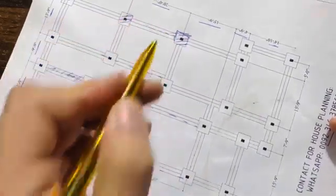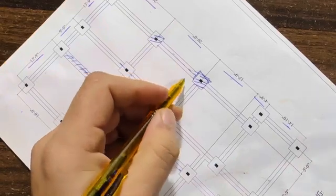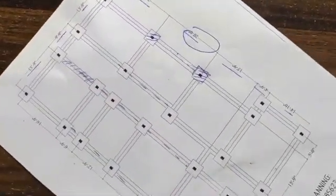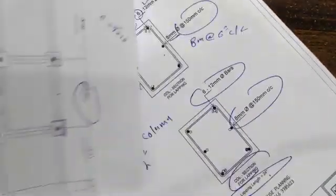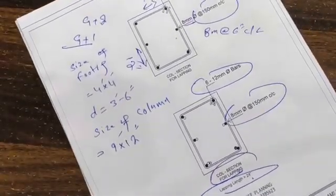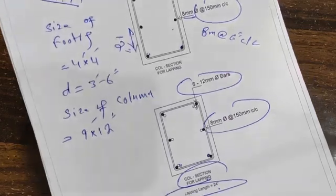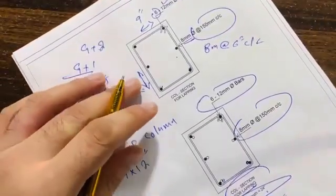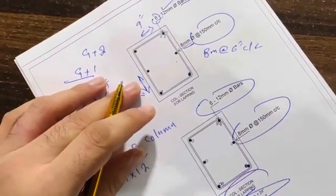The maximum span is 20 feet for this design. This was a short video in which I guided you for the size of footing, layout plan for the footing, inside column, and column steel structure design. Thanks for watching — see you in the next video, goodbye.